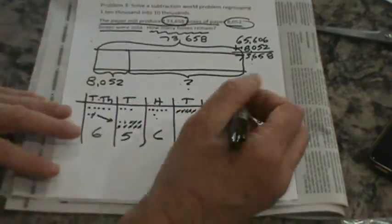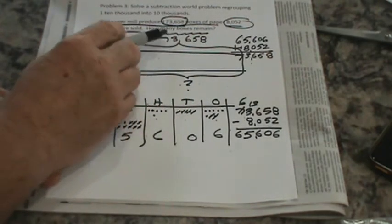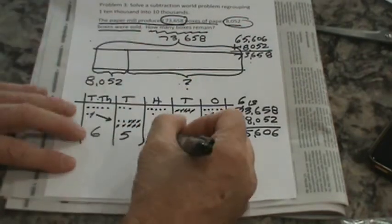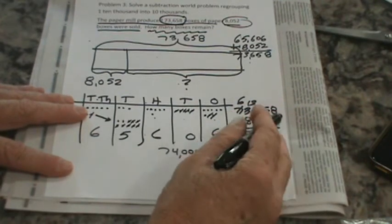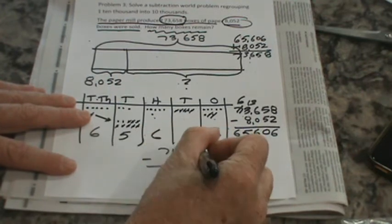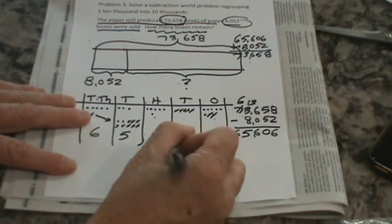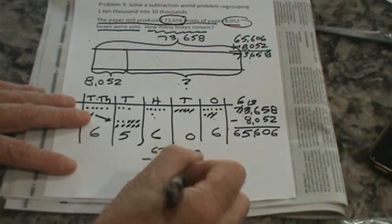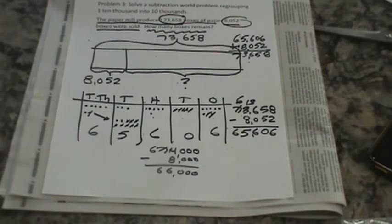We also could do a little thing called reasonableness. If I round seventy-three thousand six hundred fifty-eight to the nearest thousand place, would it be seventy-three thousand or seventy-four? Well, if you thought seventy-four thousand, you'd be absolutely correct. And then this rounds to the nearest thousand, of course, is eight thousand. And we subtract - fourteen minus eight is six, so sixty-six thousand is an estimate, awfully close to sixty-five thousand six hundred. So if they said about how many more boxes do they have left, you could have rounded and came up easily with sixty-six thousand, and that would have been pretty close to sixty-five thousand six hundred six.